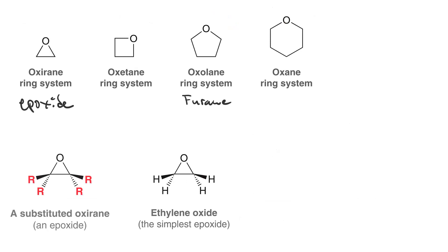So you can have up to four R groups or you can have four hydrogens. Ethylene oxide is the simplest epoxide.